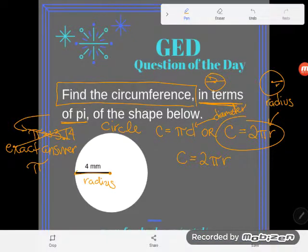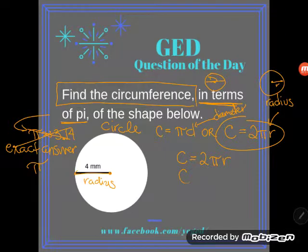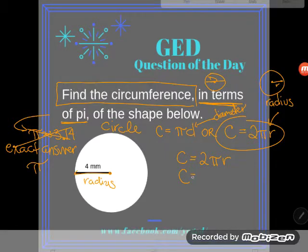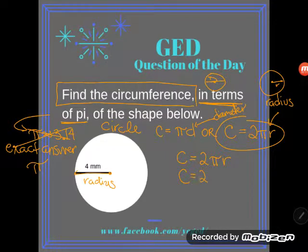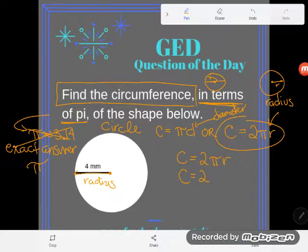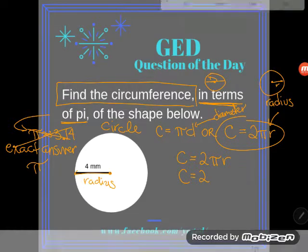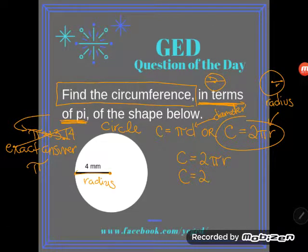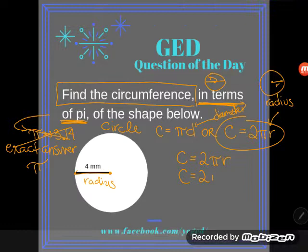Okay, so now let's substitute into our formula like we always do, but take a look. Circumference is the unknown so it'll stay C. Two, of course I leave numbers as numbers. Now I'm supposed to take two and multiply by pi, but remember these directions. They said I wanted it in terms of pi.